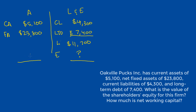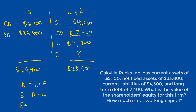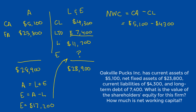Total assets equal total liabilities plus equity. Adding it up, we get $28,900 for the asset side, which means it's the same amount for liabilities and equity combined. Rearranging A = L + E to solve for E by subtracting liabilities from assets: $28,900 minus $11,700 gives us shareholders' equity of $17,200. For net working capital, current assets minus current liabilities gives us $5,100 minus $4,300, for a total of $800. This is a positive value, so we know our firm is healthy.